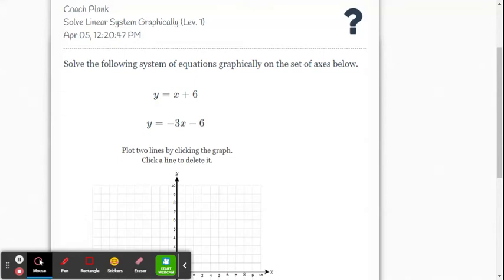In this example, we're going to solve a system of linear equations within the Delta Math system. This is going to be their level one example. Both equations are given to us in slope-intercept form.